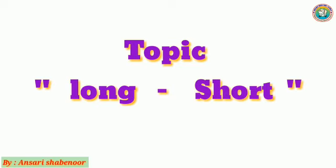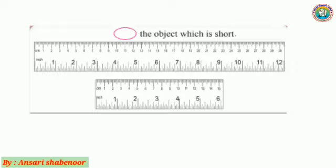Let's start. This concept we will understand with the help of questions. Now look at your first question: circle the object which is short. Here you have two scales.